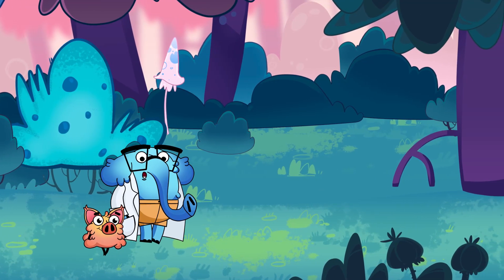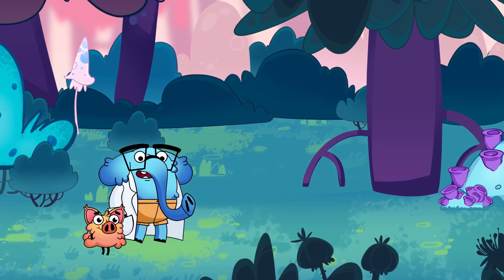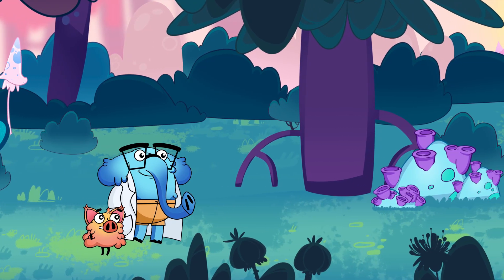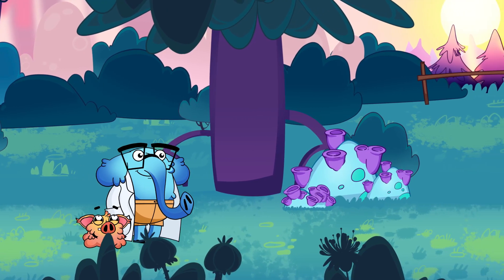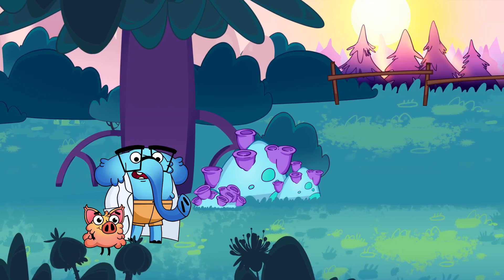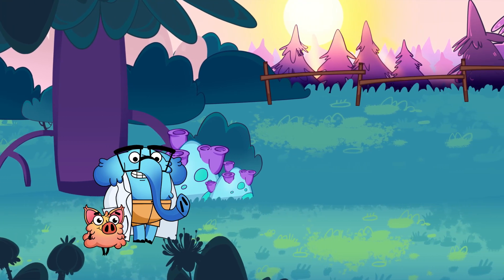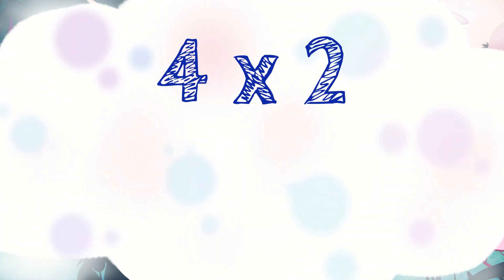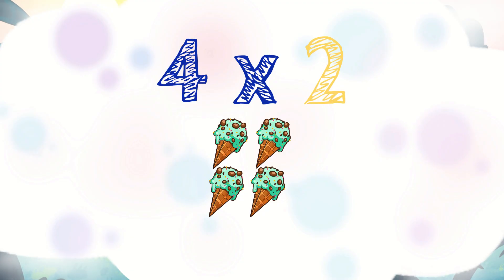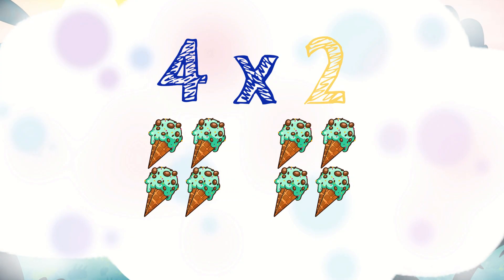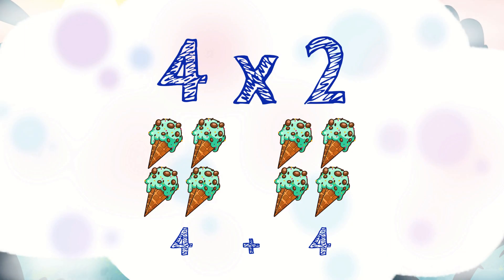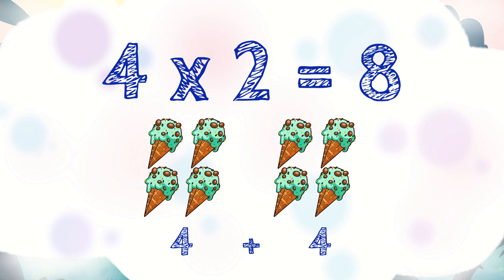Now it's your turn, Piggy. I know you can do it. How much is four times two? Can I count using ice cream cones, Professor? I like ice cream even more than candy. Sure, Piggy. It doesn't matter what you count — the answer will always be the same. The first number is the number of ice cream cones in each group, so we have four ice cream cones in each group. The second number is the number of groups, and there are two groups. That's four plus four ice cream cones, and that is eight. Which means four times two is eight. Excellent job.